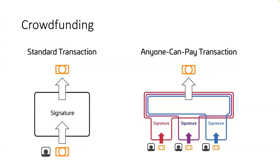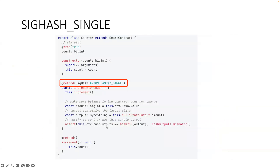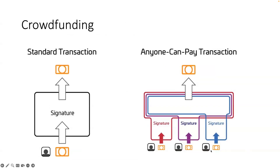Let's say Bob is very rich and puts in 80 bitcoin, and Charlie contributes another 10 bitcoin. Even after Bob's 80, it's still not valid because 10 plus 80 is 90, which is less than the 100 target. So Alice gives the partial transaction to Bob, Bob signs his own input and adds it — the transaction now has two inputs. The great thing about ANYONE_CAN_PAY is that even after Bob adds his input, Alice's original signature is still valid.